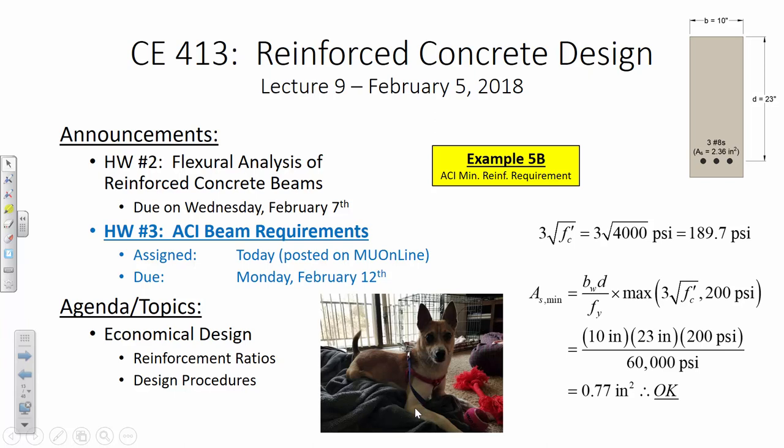Here's the beam we analyzed in example 5. B is 10, D is 23 inches, and the beam had three number eights, so the area of steel is about 2.36 square inches. You need to check ACI minimum reinforcement requirements to ensure you've met the minimum amount of rebar. The equation you use is this one here. You've got this fraction times the maximum of either 3√(fc') or 200. If you do 3√(fc'), it comes out to about 189.7, so the maximum of that and 200 is 200. So it's just B times D times 200 over fy. Since this is in PSI, fy has to be in PSI. When you do the math, it comes out to about 0.77 square inches, and we've more than met that because we provided 2.36.